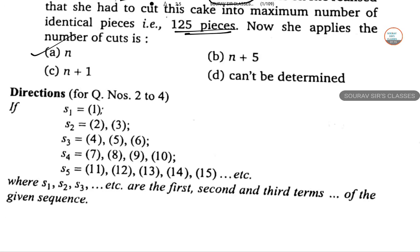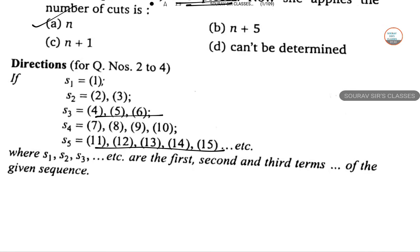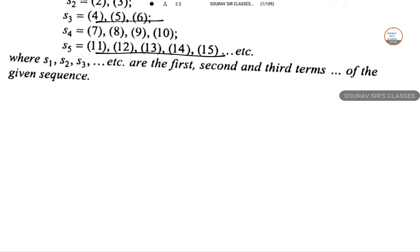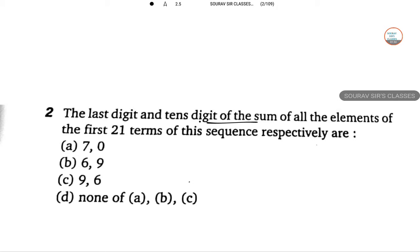Next one. The direction is given as S1 is this, S2 is this. So with respect to every time it is going up starting from a new part. The last digit and the 10th digit of the sum of all elements of the first 21 terms in the sequence respectively.